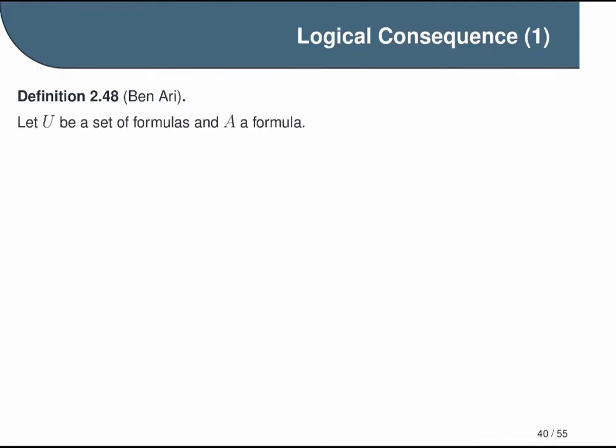Logical consequence is defined as a relationship between a set of formulas and a single formula. So we start off with some set of formulas U and an arbitrary formula A, and we say that A is a logical consequence of U if and only if every model of U is a model of A. In other words, every interpretation that satisfies a set U will also satisfy A. In symbols, we write this using the double turnstile with the set of formulas U on the left and the formula that is a logical consequence of this set on the right.